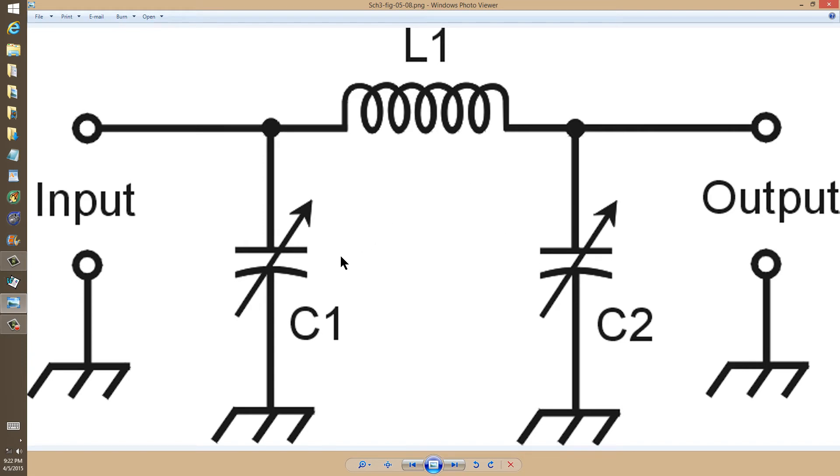Again, the inductor in series, the capacitors in parallel. And you should set the frequency, the resonant frequency, of this whole circuit in such a way that it's considerably above your transmitting frequency but considerably below the frequency of the second harmonic.